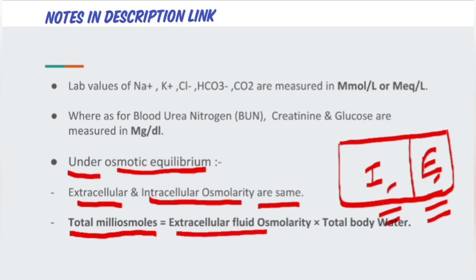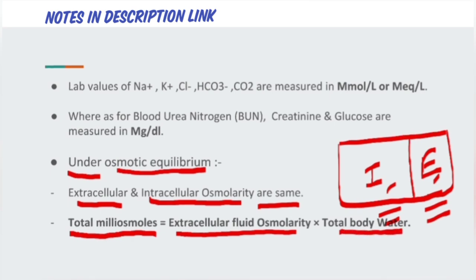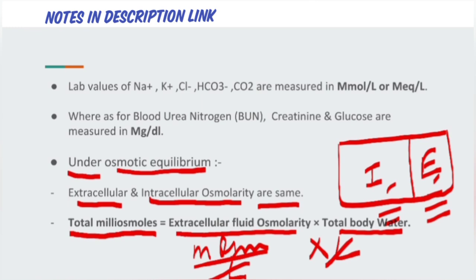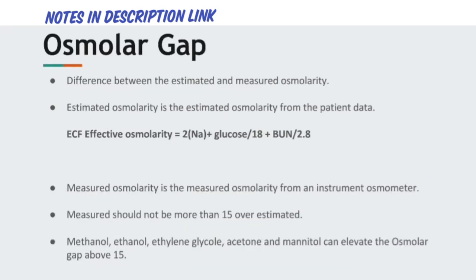Under osmotic equilibrium, we can calculate total milliosmoles of the body using extracellular fluid osmolality and total body water. The SI unit of ECF osmolality is milliosmoles per liter, and total body water is measured in liters. The liters cancel out, giving us the total milliosmoles of the body.